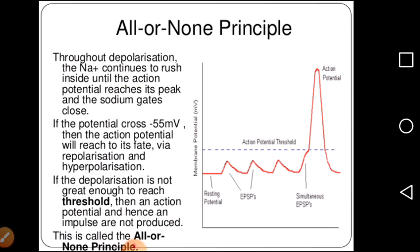Throughout depolarization, sodium ions continue to rush inside until the action potential reaches its peak and the sodium channel closes. If the potential crosses the minus 55 millivolt threshold, the action potential will proceed through depolarization and hyperpolarization. If the depolarization is not great enough to reach threshold, the action potential and hence an impulse are not produced. Threshold is required for an action potential to be generated — if not reached, no action potential will occur. This is the all-or-none principle.